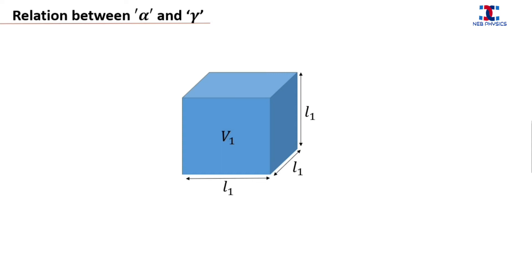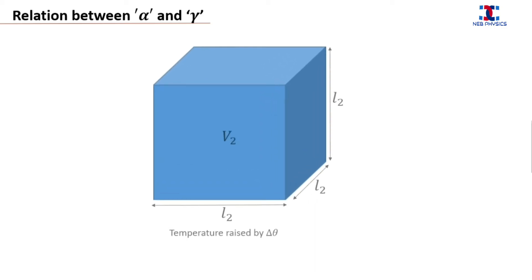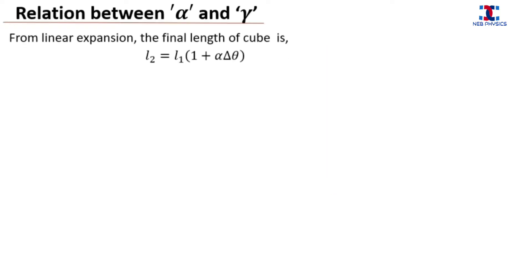Now let's derive the relation between alpha and gamma. For this, let us consider a metal cube of initial length l1 and volume v1. When this metal cube is heated for some time it expands. After expansion, let the final length be l2 and volume v2, and during this process the rise in temperature is delta theta. From linear expansion, the final length is l2 = l1 times (1 + alpha·delta theta). Now cubing both sides, we get the following expression.